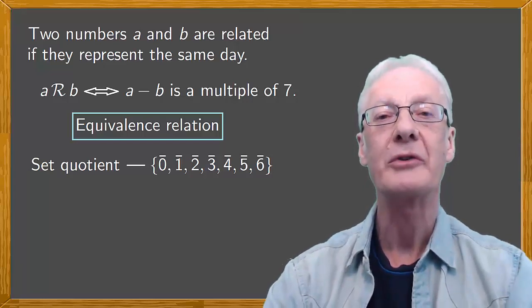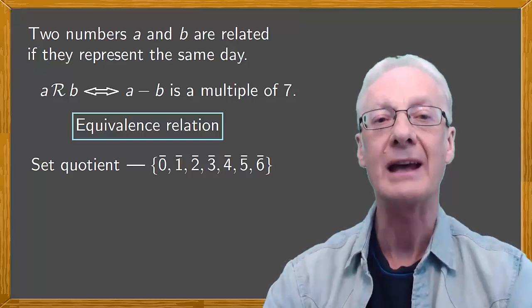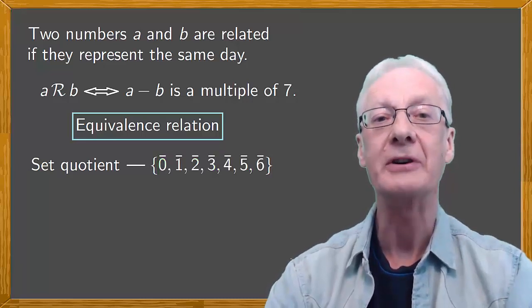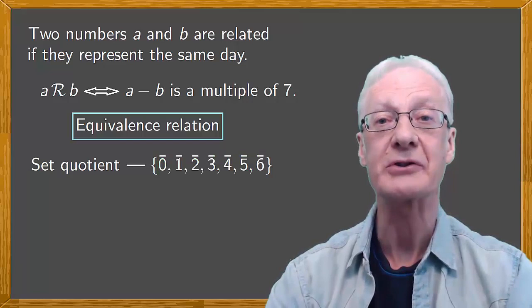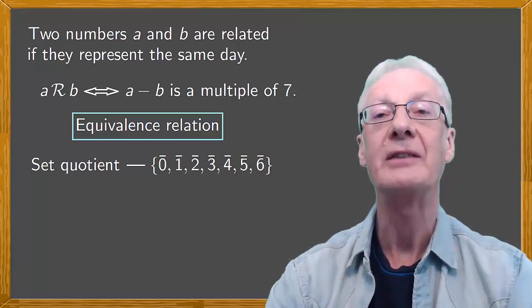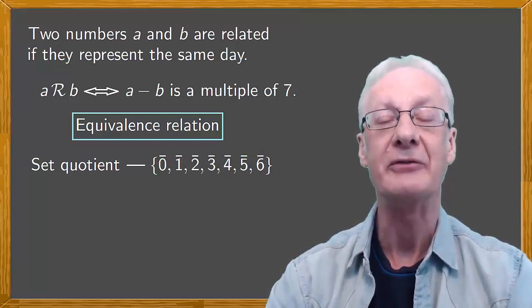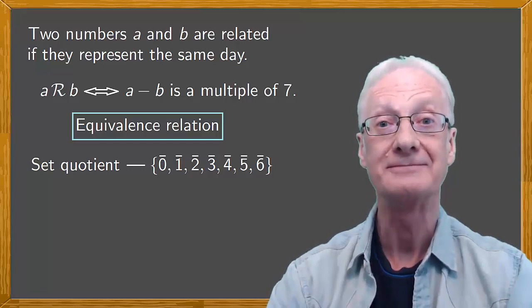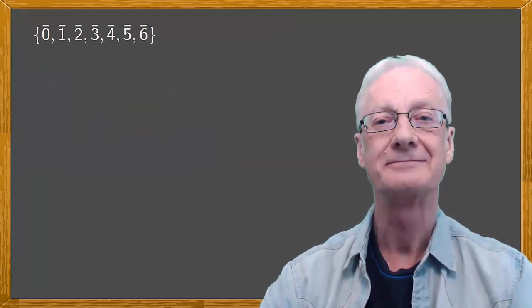When we work with the integers modulo seven, the only elements involved are the ones just mentioned, 0 through 6. If we have a different integer, this can be reduced modulo seven to find the equivalent day by dividing the number by seven and looking at the remainder.